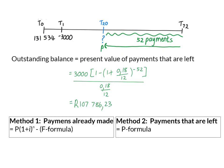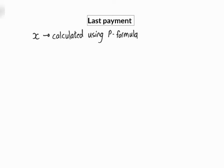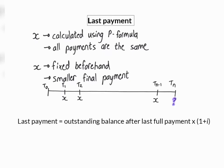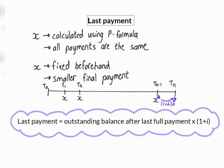So we now have two methods to determine the outstanding balance on a loan. Even though the second method is much quicker, it can only be used if you know exactly how many payments you are supposed to make. The first method can always be used. When the repayment value is determined using the present value formula, all payments will have the same value. If, however, your payment is fixed beforehand, your final payment will probably be a bit smaller than the rest. To determine this smaller final payment, you first determine the outstanding balance straight after the last full payment, and this amount then grows with one period's interest before you make your final payment.